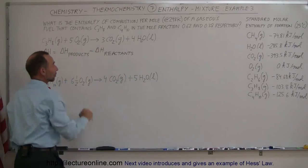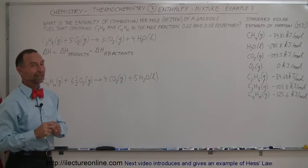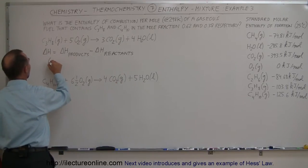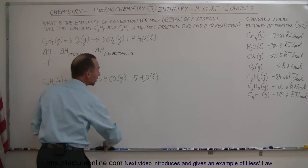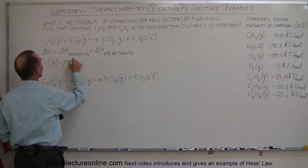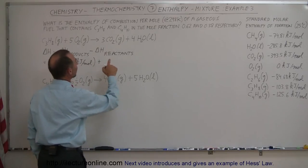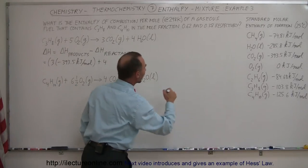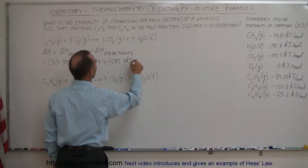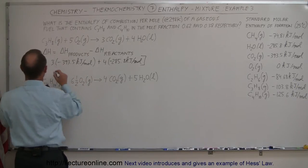Starting with the products, we have three moles of carbon dioxide. The enthalpy change for the formation of carbon dioxide is minus 393.5 kilojoules per mole, which means when you produce carbon dioxide it releases that amount of energy. So that's three times minus 393.5 kilojoules per mole. Then we add to that four times the formation of water, which is minus 285.8 kilojoules per mole. That would be the total enthalpy change for the products.